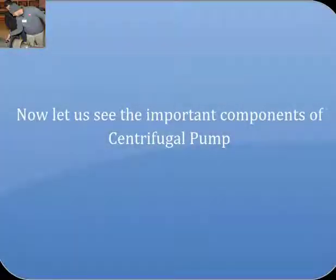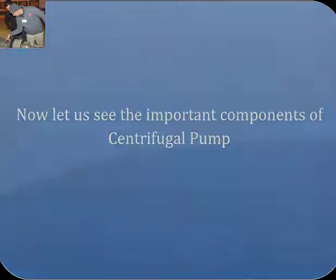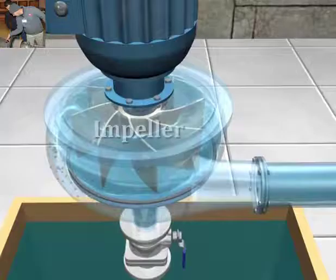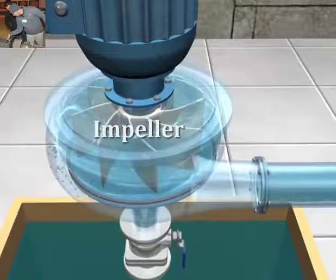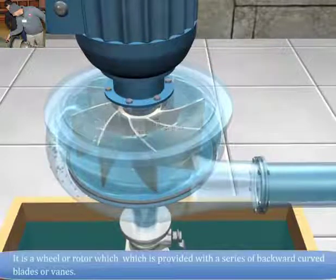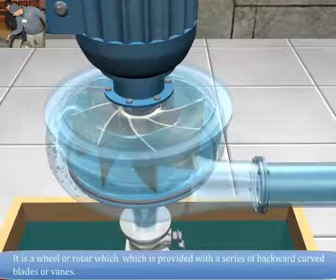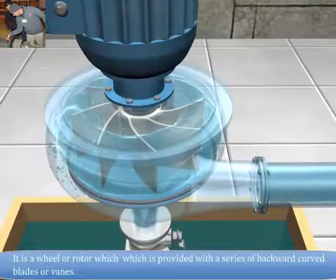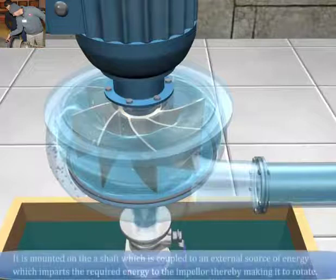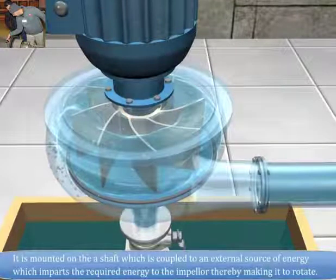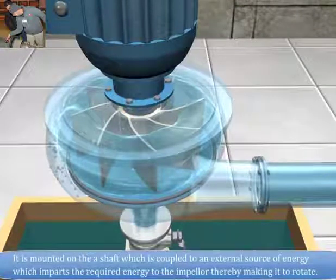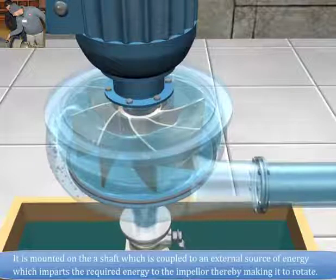Now let us see the important components of centrifugal pump. Impeller. It is a wheel or rotor which is provided with a series of backward curved blades or vanes. It is mounted on the shaft which is coupled to an external source of energy which imparts the required energy to the impeller thereby making it to rotate.